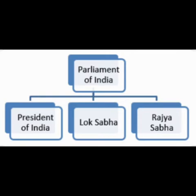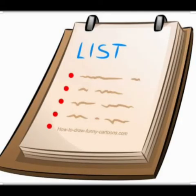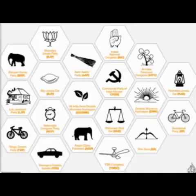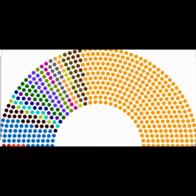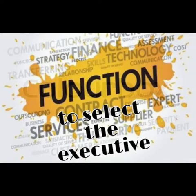Once the Lok Sabha elections are done, a list is prepared showing the number of MPs belonging to each political party. The political party that covers the maximum number of seats forms the government, and the other one is known as the opposition party. One of the most important functions of the Lok Sabha is to select the executive.